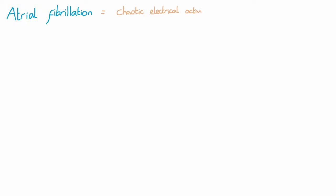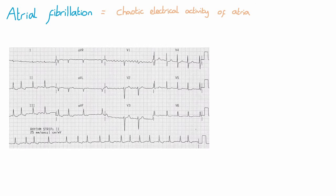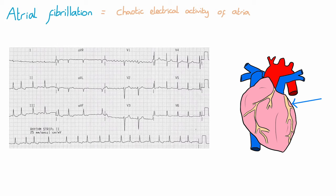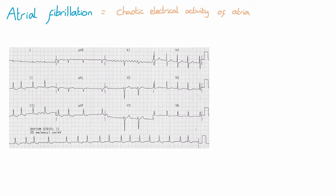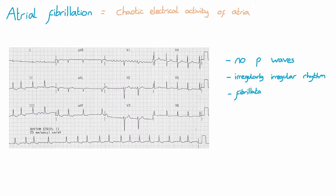Atrial fibrillation often presents with tachycardia. It occurs when there's chaotic electrical activity coming from the atria, often derived from the roots of the pulmonary veins, rather than the SA node. Two distinctive features that allow you to identify AF is the absence of P-waves throughout the ECG, and an irregularly irregular rhythm, which means an irregular rhythm with no obvious pattern or predictability. You may also see fibrillatory waves along the isoelectric line — be careful not to confuse these for P-waves, or you may miss the diagnosis. Notice on this ECG how the QRS complexes are narrower than 0.12 seconds, or three small squares. This is an indicator that the arrhythmia is arising from above the ventricles, in other words, it's a supraventricular arrhythmia.